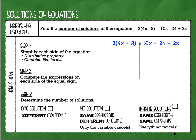Here's the problem. It says find the number of solutions of this equation. If you take a look at this equation, you'll see that there is a lot going on here — we've got variables on both sides and distributive property, like terms. If we were going to solve this problem it would take us a lot of steps. However, we're not doing that today. Today all we are doing is figuring out how many solutions this equation has. If you look at the bottom here, these are the different choices. All of the equations that you have solved so far up until this point have one solution.